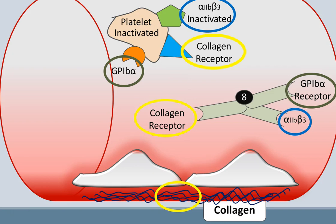Now that we have seen these functions, it is important to know that Von Willebrand Factor is produced and stored in the endothelial cells and also in the platelets. You could say that these cells store the stock of Von Willebrand Factor and are continuously releasing it into the bloodstream. This ensures the availability of Von Willebrand Factor when it is needed to participate in blood coagulation. We will talk about this in the third video of this series, when we will see the treatment options for people affected by Von Willebrand Disease.